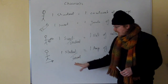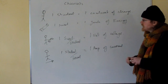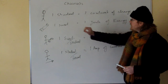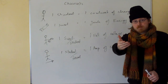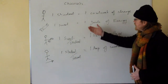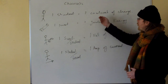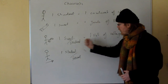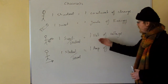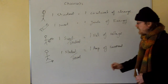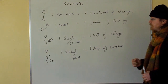One student passing per second is one amp of current. So let's go through this again. One student is one coulomb of charge — I am a coulomb of charge. One suite represents one joule of energy. One suite per student, or one joule per coulomb, is one volt of voltage. Finally, one student passing every second is one amp of current.